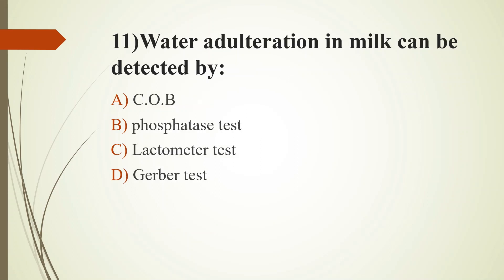Eleventh question: Water adulteration in milk can be detected by — Option A: COB (Clot on Boiling test); Option B: Phosphatase test; Option C: Lactometer test; Option D: Gerber test. The answer is Option C: Lactometer test, which is used to detect the density of milk. The Clot on Boiling test is a rapid platform test. The Phosphatase test is used to detect the adequacy of pasteurized milk — the enzyme phosphatase normally present in milk is inactivated if pasteurization has been carried out properly. Residual phosphatase activity indicates that pasteurization was not adequate.